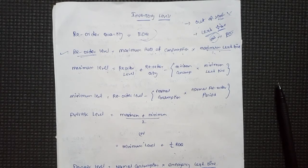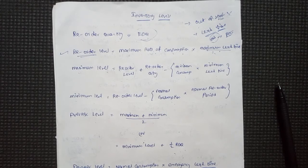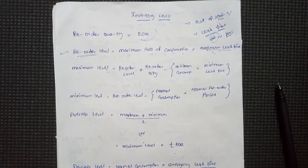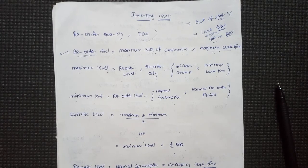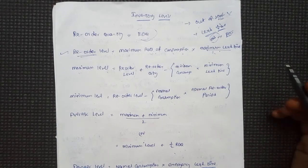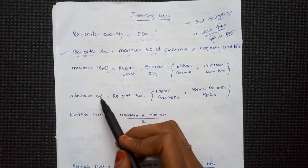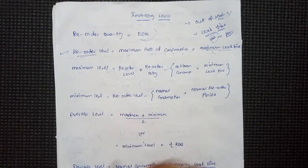If you want to place an order quantity, I will tell you how much the quantity is. If you want to order the stock, we talk about the levels of stock. When you reach the reorder level, it's time to order the stock. There are 3 levels: minimum level, maximum level, average level, and reorder level.